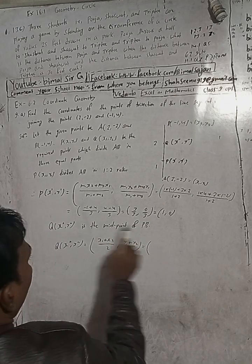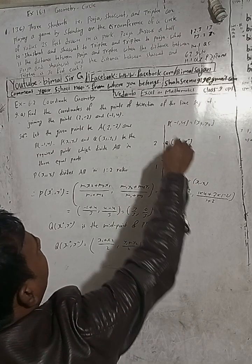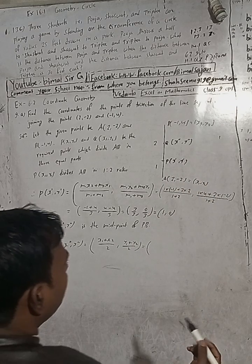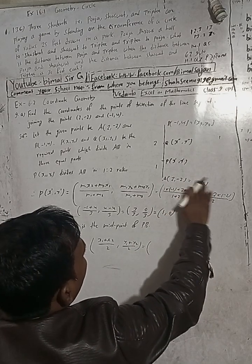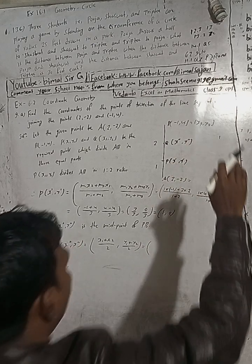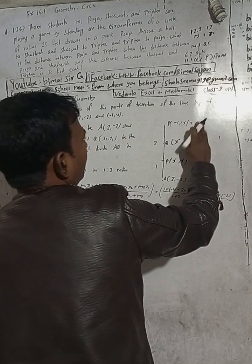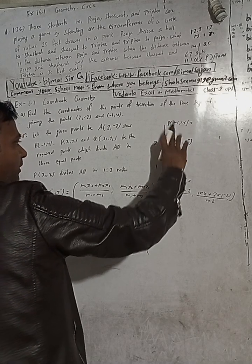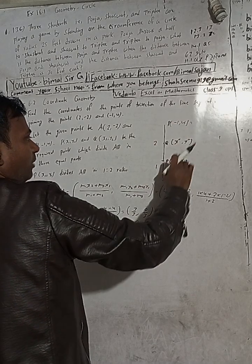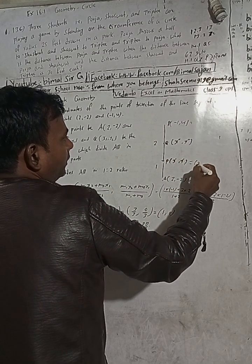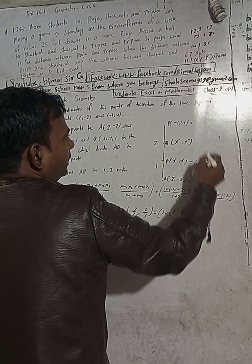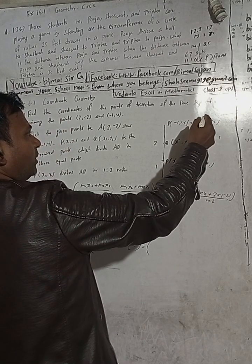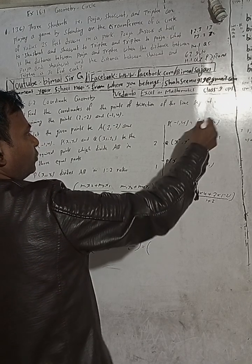In this case, we will use the midpoint formula for PB. The point Q with coordinates x1, y1 and x2, y2. Q is the midpoint of PB, where P is x1, y1 and B is x2, y2.